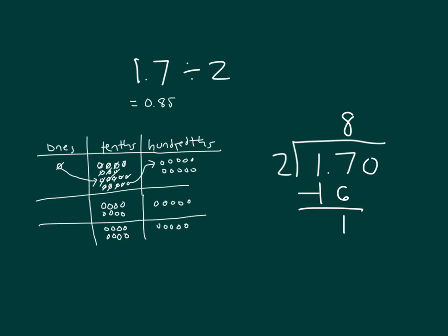Add a 0 to drop a 0. 10 divided by 2 is 5. 5 times 2 is 10, and 10 minus 10 is 0. And the decimal point. So that's our written method for that problem.